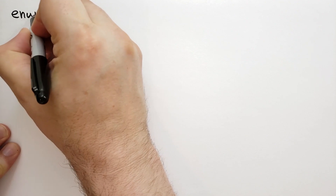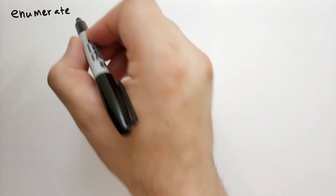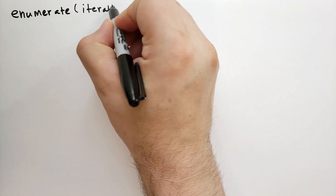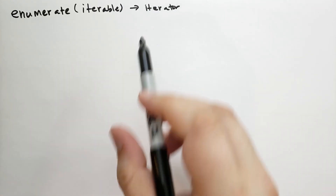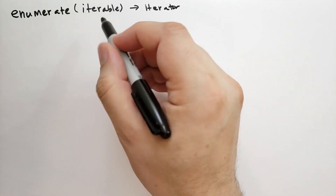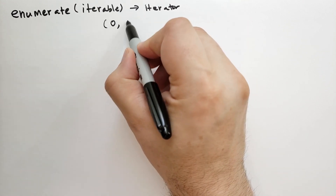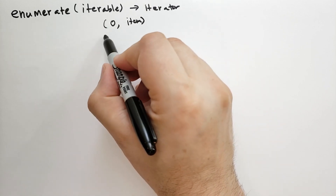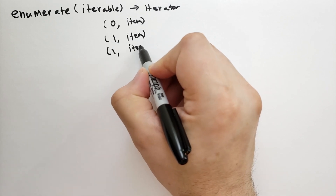When you're iterating across items in a sequence, oftentimes you want to remember the index of the item. The enumerate function can help with that. Enumerate takes a single iterable as an argument and returns an iterator. The iterator returns pairs: the index and the first item, then one and the next item, and so on until the items are exhausted.